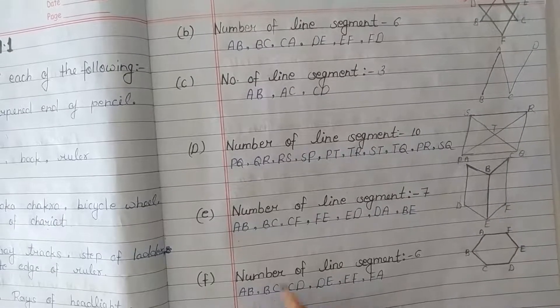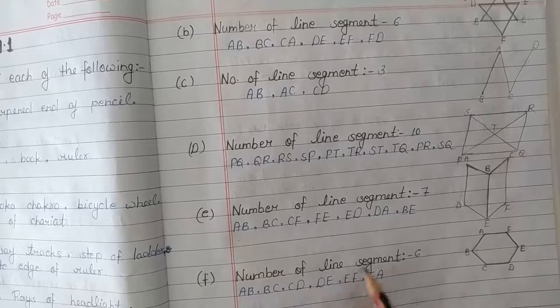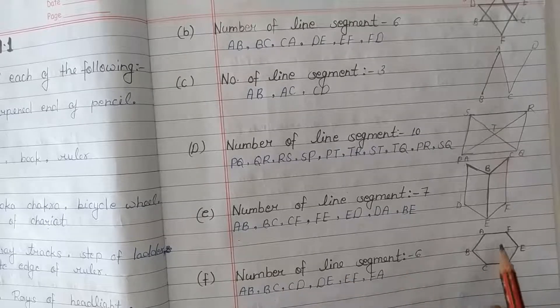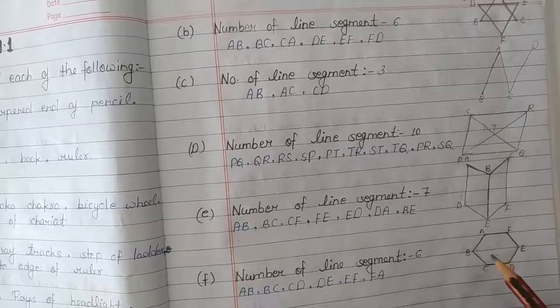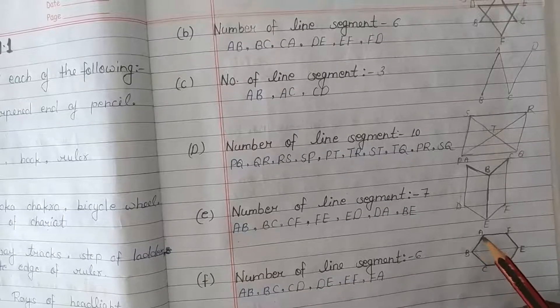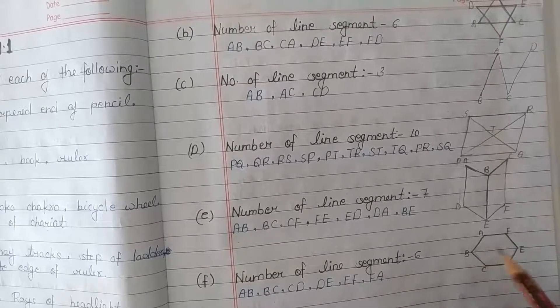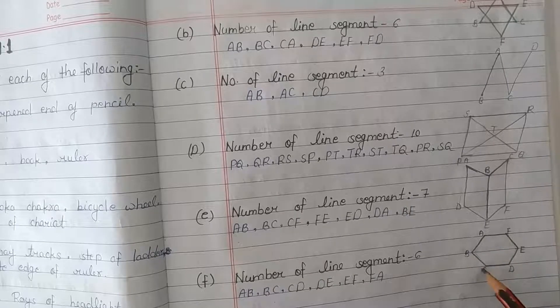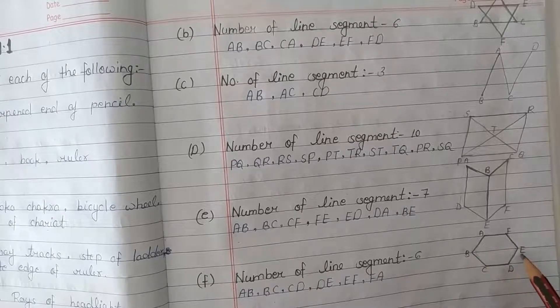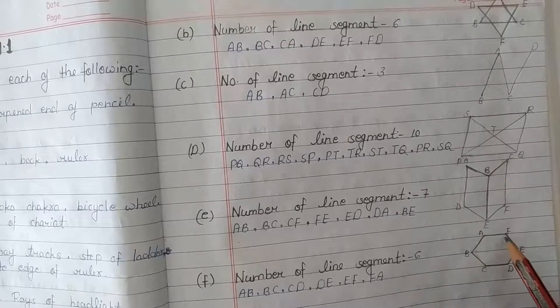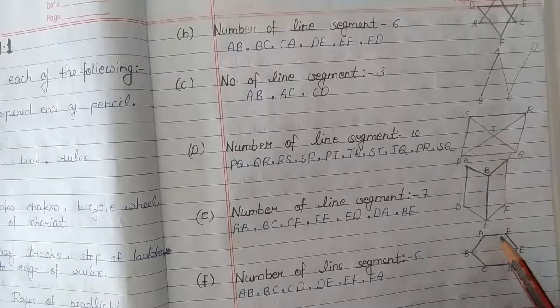Number of line segments is equal to 6 in this figure. The segments are: AB, BC, CD, DE, EF, and FE — totaling 6 line segments.